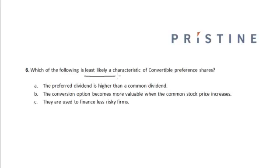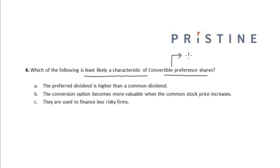Which of the following is least likely a characteristic of convertible preference shares? The options are: the preferred dividend is higher than a common dividend, the conversion option becomes more valuable when the common stock price increases, and they are used to finance less risky firms.